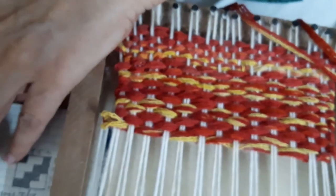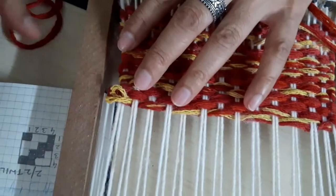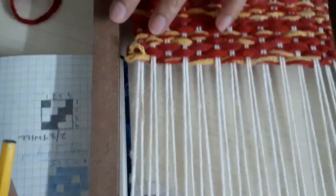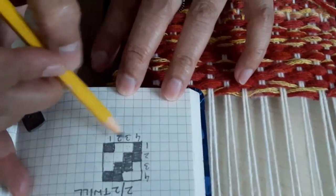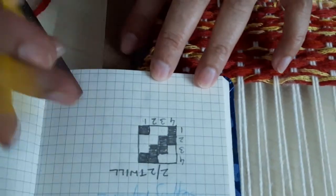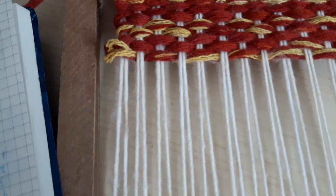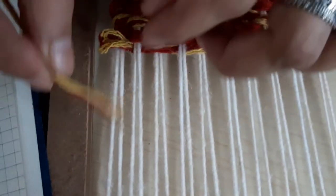Which yarns are up here? One and four. Every one and four is up. When we are weaving, you have one, two, three, four, so every one and four is up.